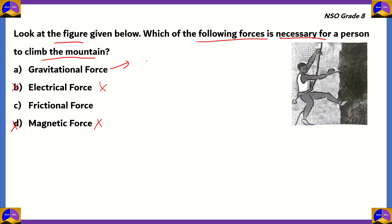So we have gravitational force and frictional force as the two remaining options. Gravitational force is one of the four fundamental forces of nature and always acts downwards on Earth — it always attracts any object towards the earth, which in our perspective means down the mountain. So gravitational force would actually hinder the person from climbing rather than helping him. Therefore, option A turns out to be incorrect.